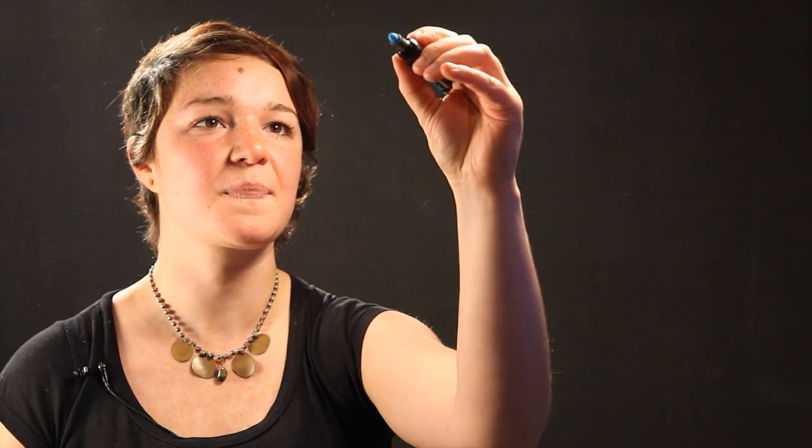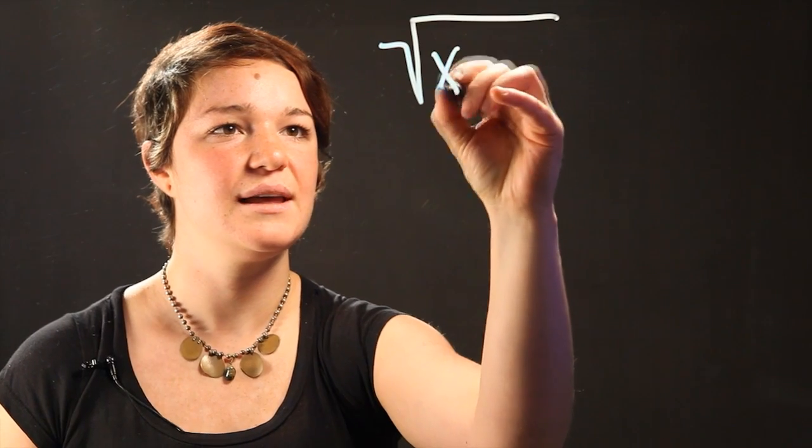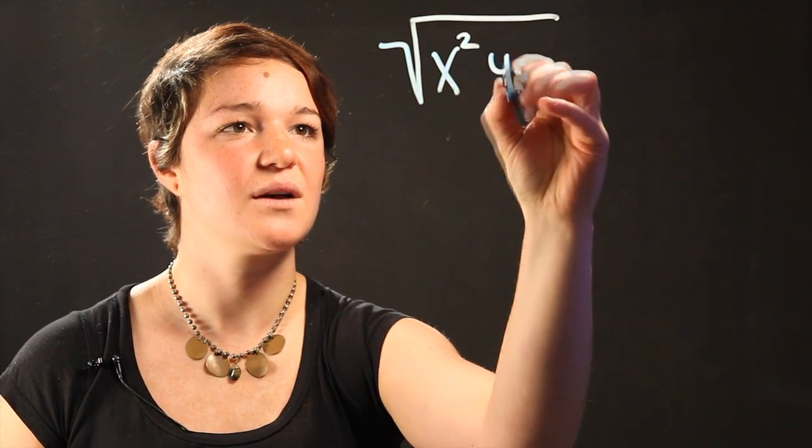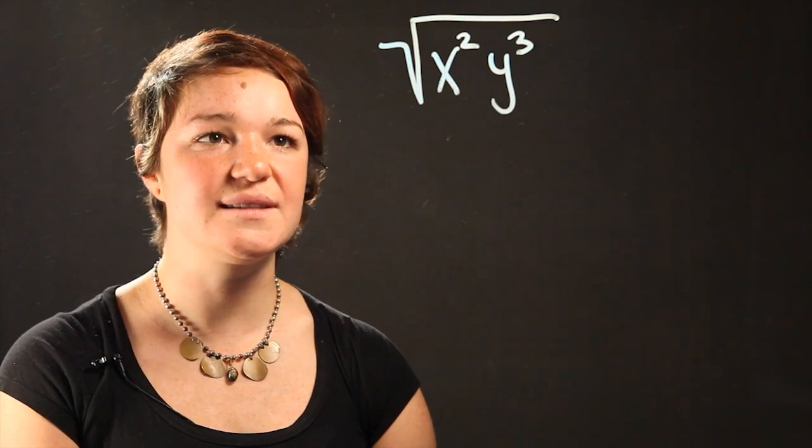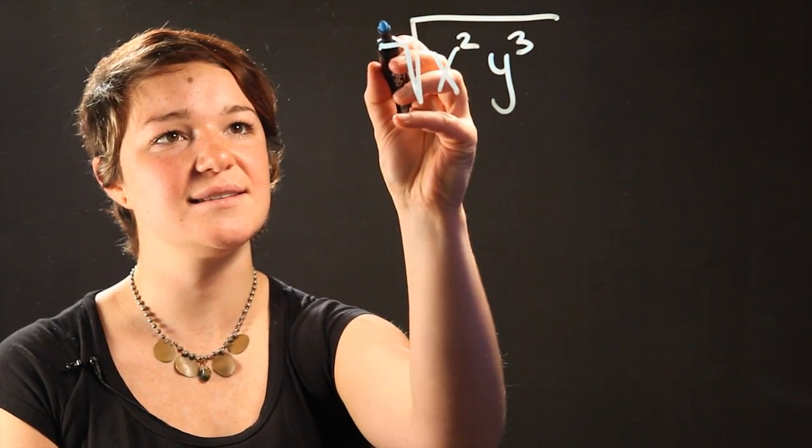We're going to start off with an example where we have a radical such as the square root of x squared y cubed. So in this case we have a radical that's a square root. That means the index here is 2.